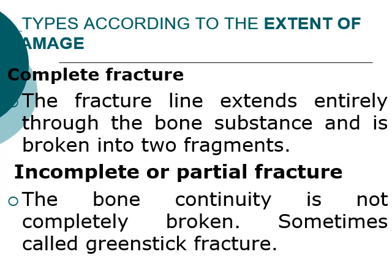The other type of classification is according to the extent of the damage: whether it is complete, incomplete, or partial. A complete fracture means the whole bone is completely broken into two or more fragments. An incomplete or partial fracture is where only one side of the bone is broken while the other side remains intact. This is commonly seen in what we call a green stick fracture.